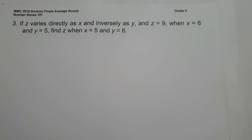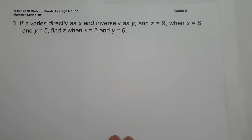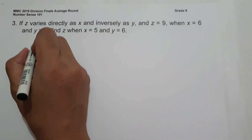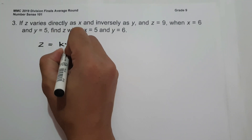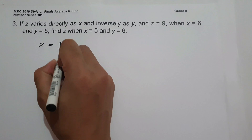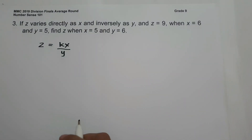On number 3, if z varies directly as x and inversely as y, and z equals 9 when x equals 6 and y equals 5, find z when x equals 5 and y equals 6. To find the value of z, let us first write the equation. Z varies directly as x gives z equals kx, and inversely as y gives z equals kx over y.